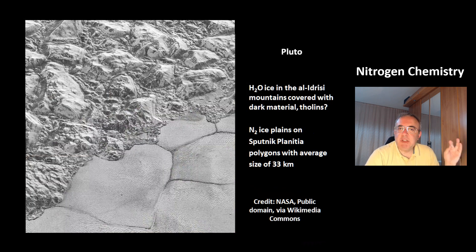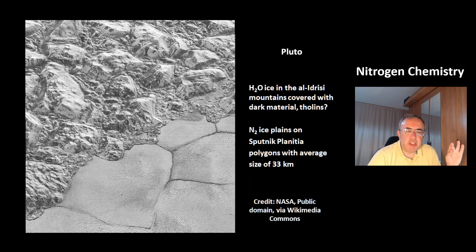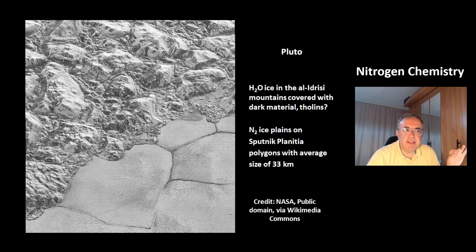This is a picture of the dwarf planet Pluto. At the top, this structure is the Pallidrizi mountains, which are water-ice mountains covered with dark material. The dark material could be tholins — reaction products of hydrocarbons with nitrogen and UV light. At the bottom you can see the nitrogen ice plains on Sputnik Planitia, which are polygons with an average size of 33 km.